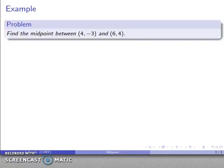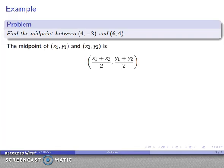So for example, let's say I have the two points 4, negative 3, and 6, 4. So I can find the midpoint. Paper is cheap, so let's go ahead and write down our formula.